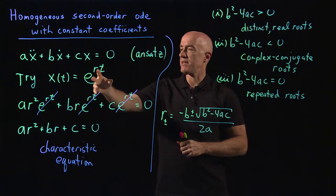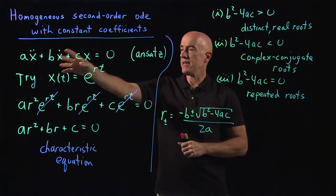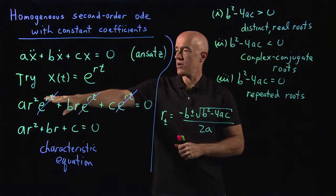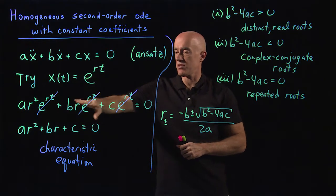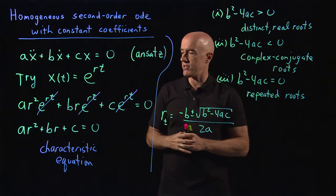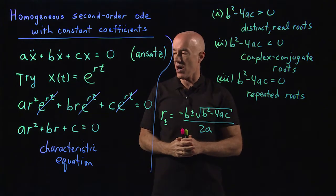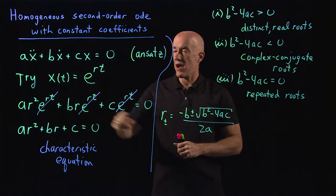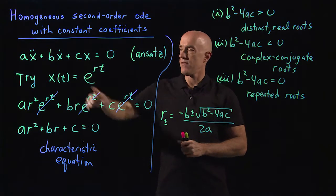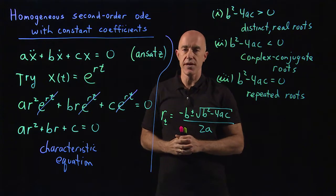Our solution method basically guesses the solution with a free parameter r. We guess an exponential function, e to the rt, because the exponential function will cancel out of the equation, leaving us an algebraic equation for r. This is called the characteristic equation of the differential equation.